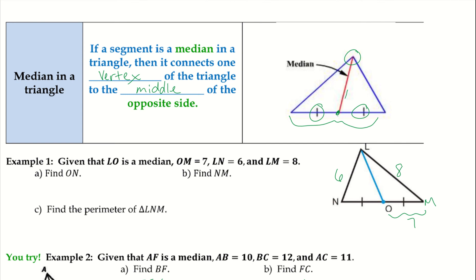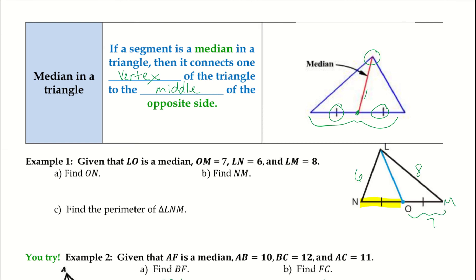Let's find ON. So ON is right here, and I notice it has that little dash there which means that it has to be congruent to the other line that has the dash which happens to be OM, and OM we know is 7, so therefore ON must also equal 7.